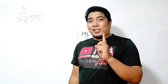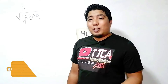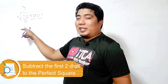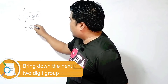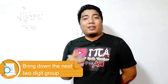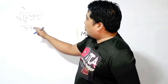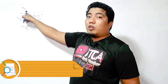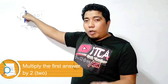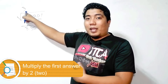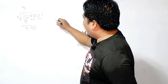Now you already have your first digit. Next, you subtract 12 minus 9. The answer is 3, and then you bring down the next two digits — you will have 332. In this case, you get the double of 3, that is 3 times 2. You will always multiply it by 2. So 3 times 2 is 6.